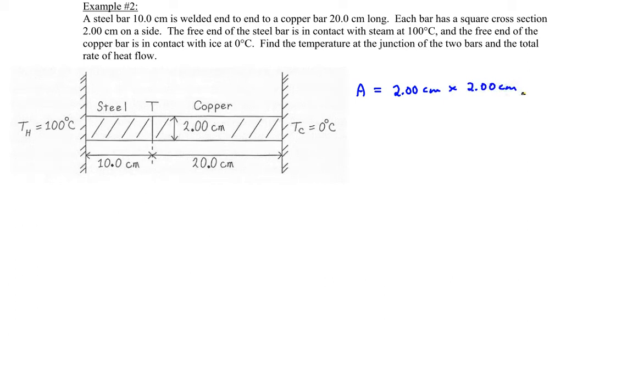Now what's the key idea in solving this problem? You have heat flowing through steel and copper, two different materials that are in succession with one another. There is an interface right here between the steel and the copper, and it's not going to be 50 Celsius. Because steel and copper have different thermal conductivities, and plus the lengths are different. So you can't just say it's 50. That's what we're trying to find, is what is that temperature right here.